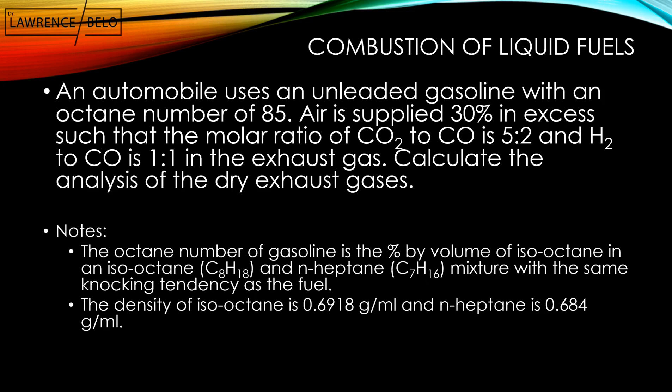Calculate the analysis of the dry exhaust gases. Take note that when you say octane number, it means it is the percentage by volume of gasoline in an isooctane and heptane mixture with the same knocking tendency as the fuel — basically the percentage of isooctane in the mixture of isooctane and heptane. Also given is that the density of isooctane is 0.6918 g/ml and n-heptane is 0.684 g/ml.